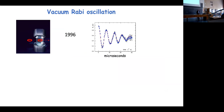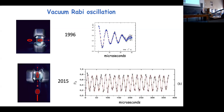The first Rabi signal we obtained in 1996 with the horizontal setup showed several damped oscillations — the cavity was good but not as good as now. Many years later, using a slow beam of laser-cooled atoms, we can now see more than 20 Rabi oscillations. The system is oscillating between zero and one photon continuously. This signal illustrates the advantage of laser cooling: with slow atoms you can observe these oscillations on a much longer time scale.